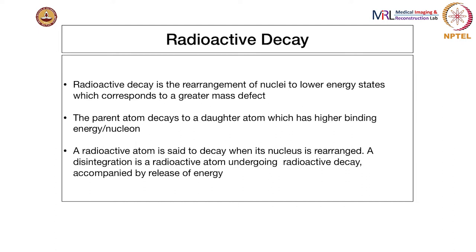A primer on radioactive decay: radioactive decay is the rearrangement of nuclei to a lower energy state. Some nuclei are inherently unstable and tend to transition to lower energy states corresponding to greater mass defect — this comes from the physics of radioactive decay. Basically the sum of parts tends to be less than the individual sums. If you calculate the mass of the protons and neutrons of an atom and then actually measure the nucleus, there will be a difference, known as mass defect. Atoms tend to move to lower energy states with greater mass defect.